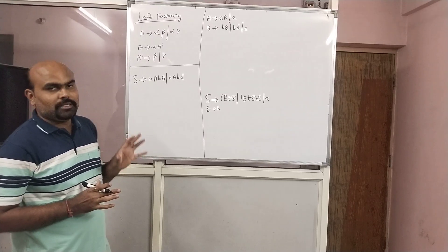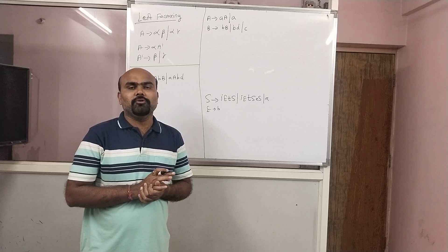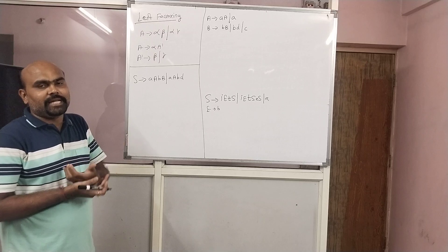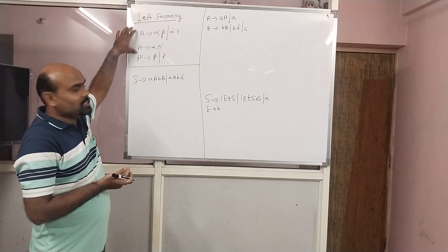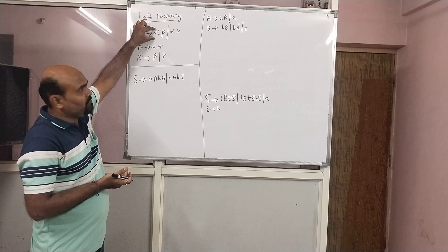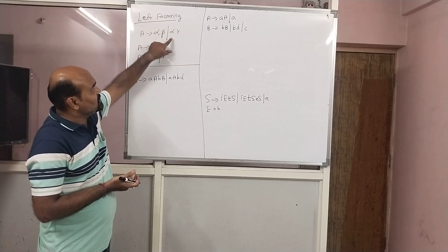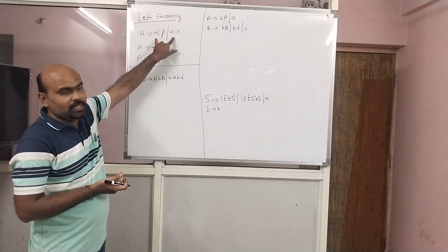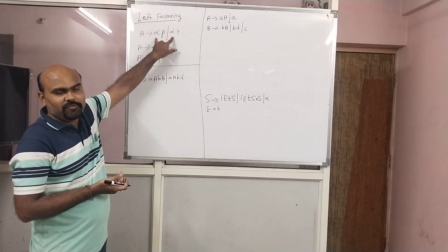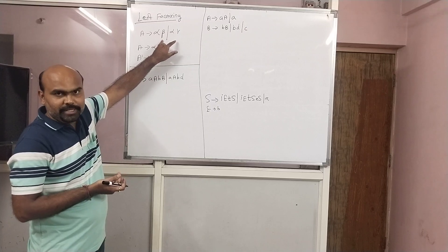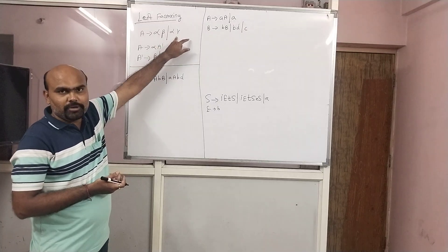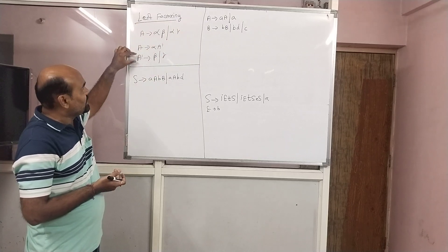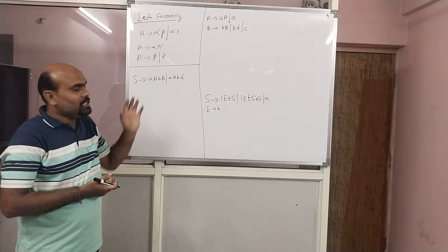We have seen left recursion. Now we will see how to remove left factoring. Left factoring is identified like this: if the first part of the first production and the first part of the second production are the same, it means there is left factoring. That common part is called alpha; what comes after in the first production is beta, and in the second production is gamma. To solve: A gives alpha A-dash, and A-dash gives beta slash gamma.